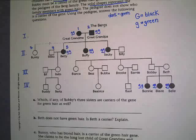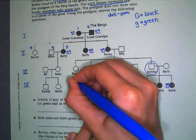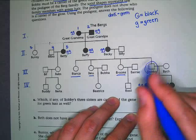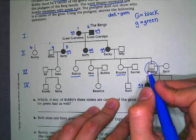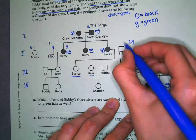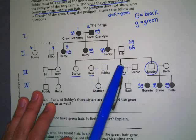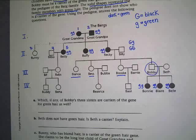Let's go on to our questions because we don't know who we're looking for yet, and the questions will tell us what to do. Question A says: which, if any, of Bobby's three sisters are carriers for the green hair gene? This is Bobby and these are his sisters — Brooke, Bess, and Bianca. You can see why it's sometimes nicer to number them. We know that Becky is little g, little g, but Billy has black hair. If he has the dominant trait, what two possible genotypes could he have? Big G, little g — or what else? Big G, big G. But we don't know what he has; there's no way to tell by looking at him.